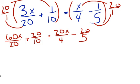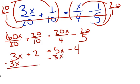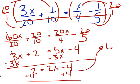Now I'm going to simplify. 60x over 20 — these cancel to give me 3x. 20 divided by 10 is 2. 20 divided by 4 is 5x. And 20 divided by 5 is 4. So I got rid of all the denominators and made them whole numbers: 3x minus 2 equals 5x minus 4. I subtract 3x from both sides to get 2 equals 2x minus 4, then add 4 to both sides to get 6 equals 2x, divide each side by 2, and x is equal to 3.